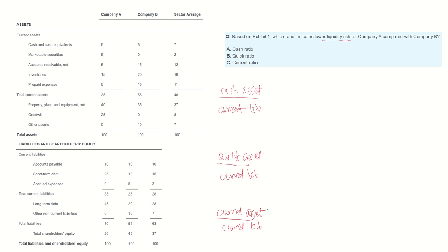Cash assets are considered cash and cash equivalents and marketable securities. Quick assets include cash assets plus accounts receivable. Current assets include all quick assets — cash, marketable securities, and accounts receivable — plus inventory. So let's plug in the numbers and calculate these liquidity ratios for company A and B.